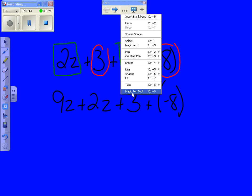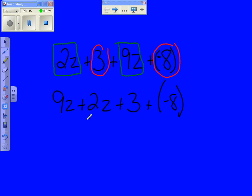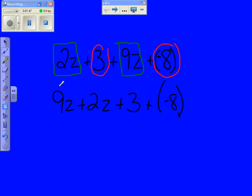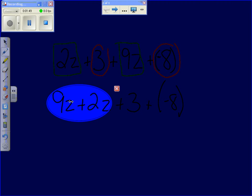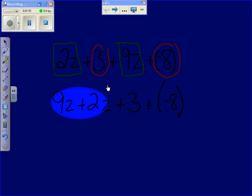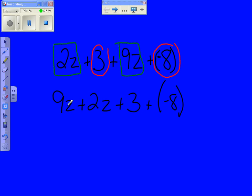Now just identify your like terms and combine them. I have like terms right here, two like terms: 9z plus 2z. So let's go ahead and combine those. 9z plus 2z is 11z.